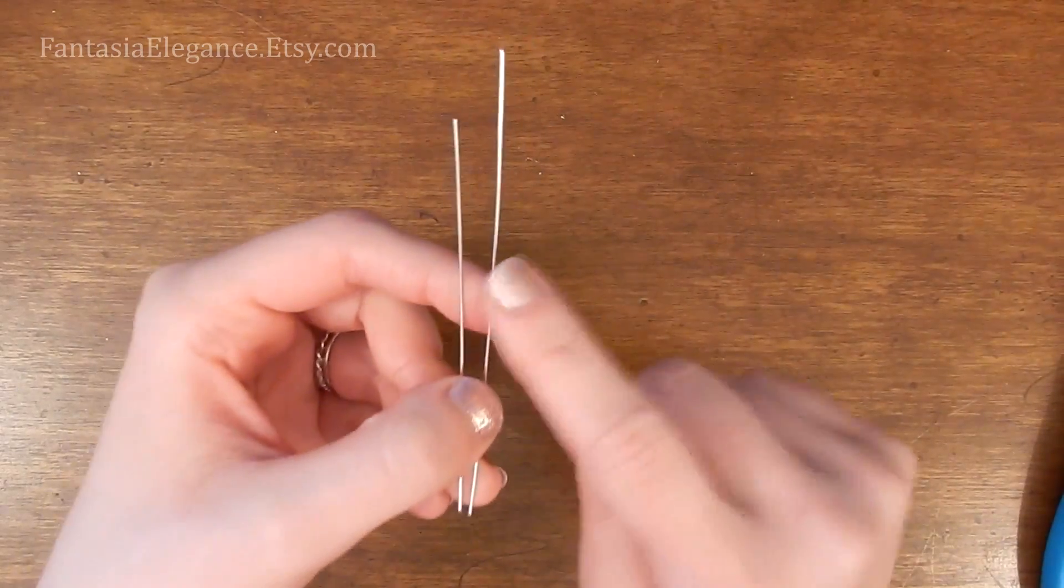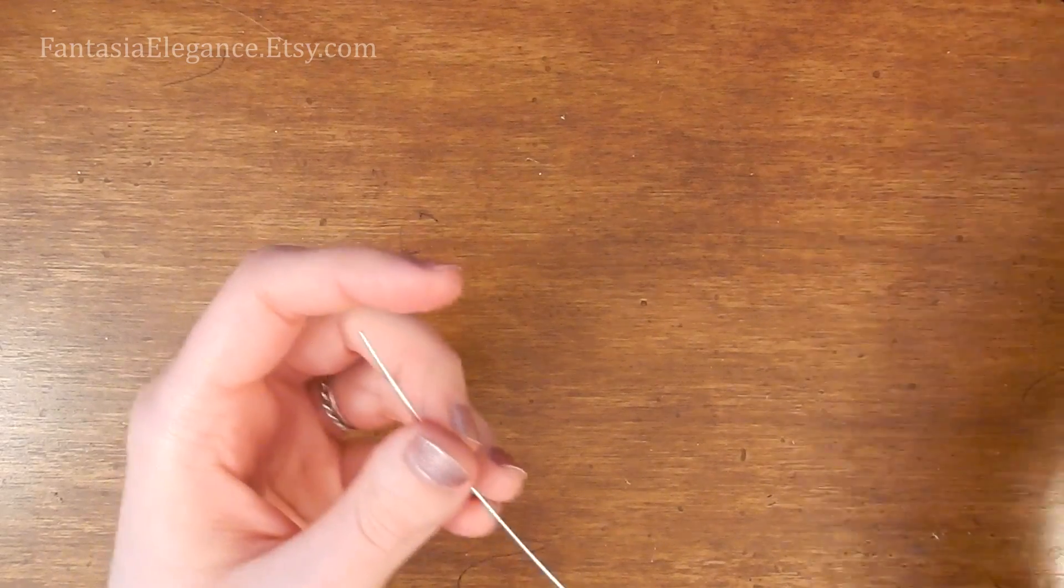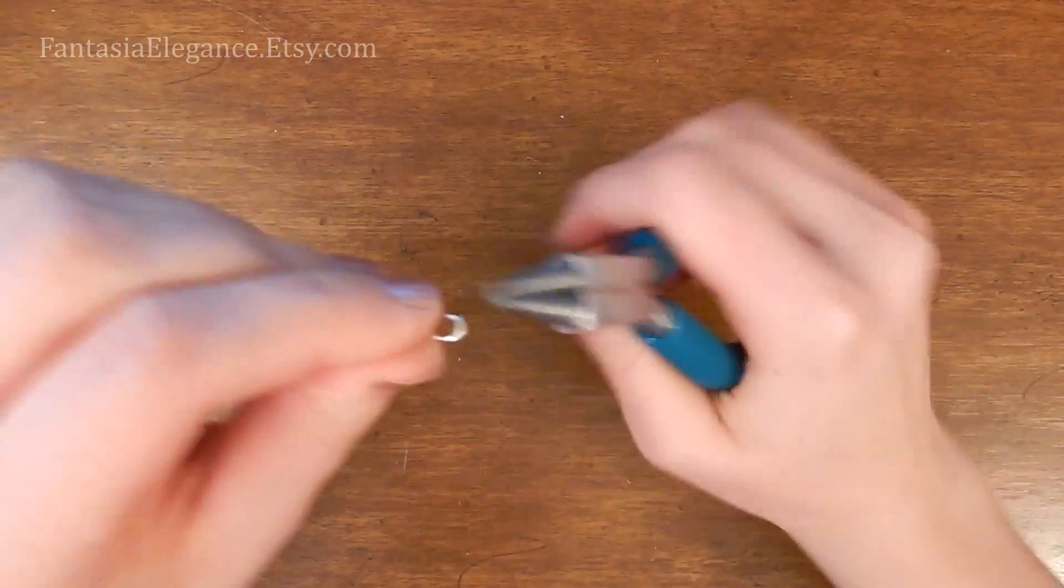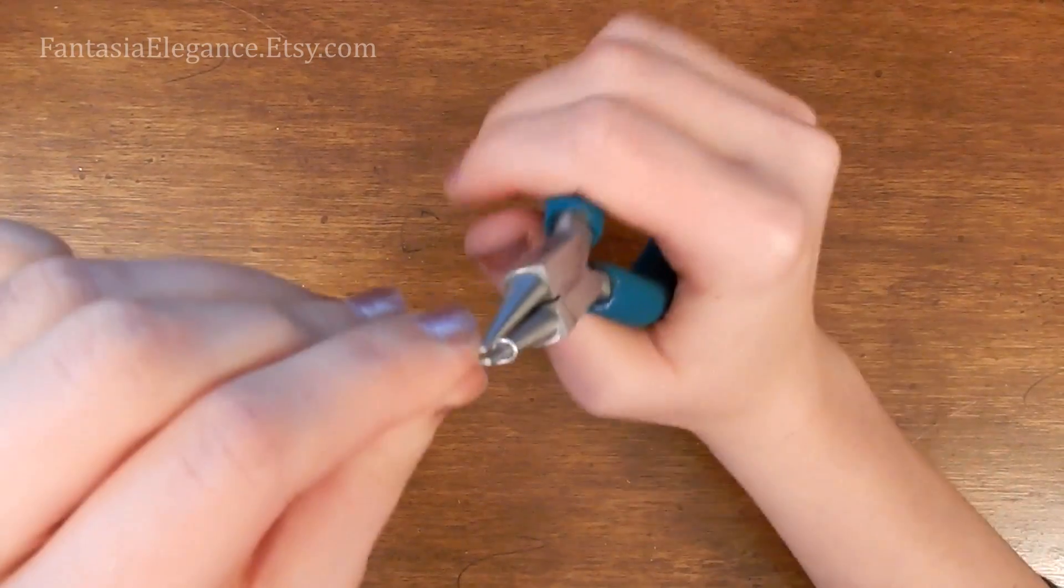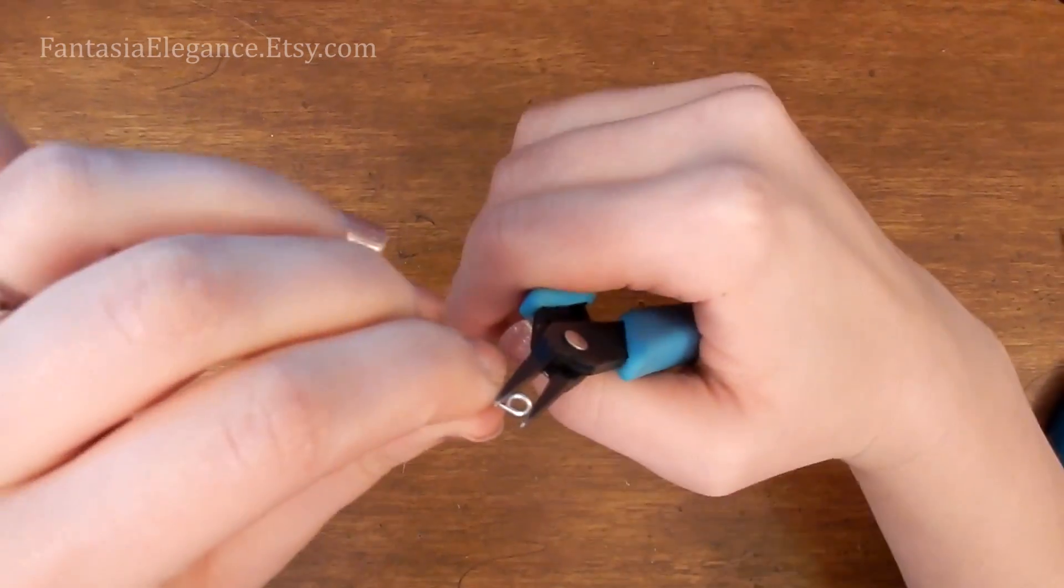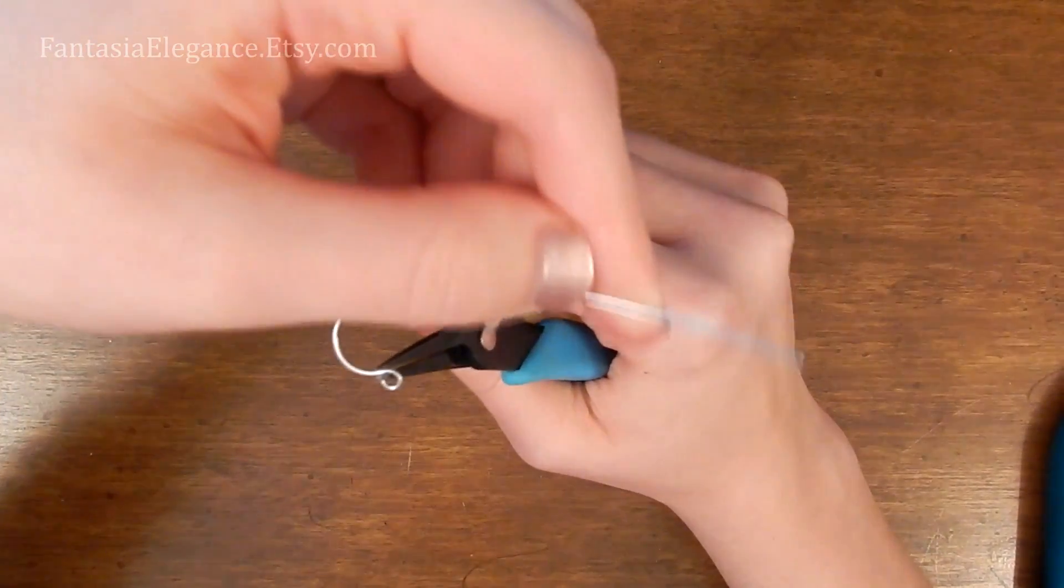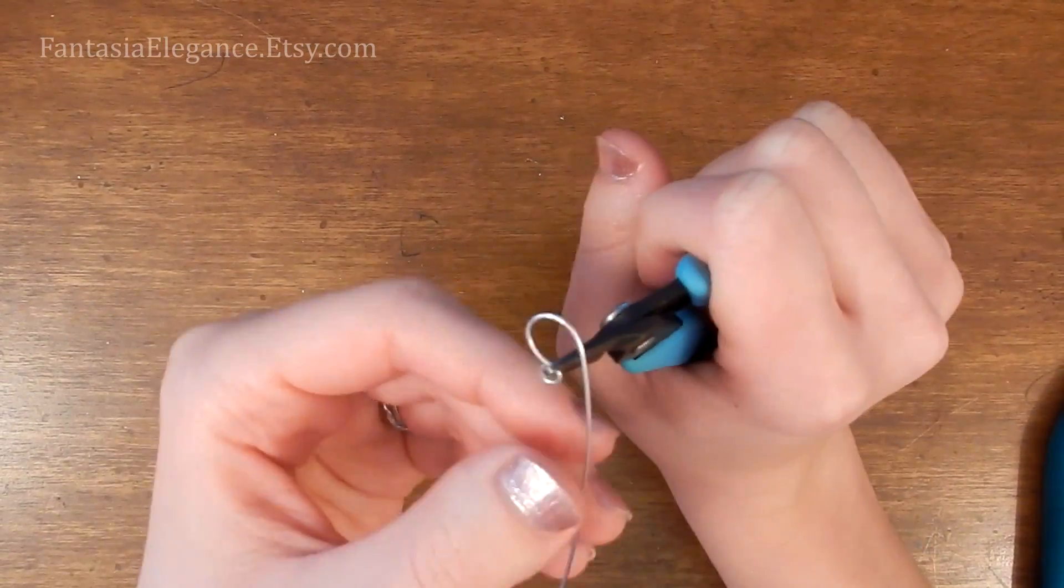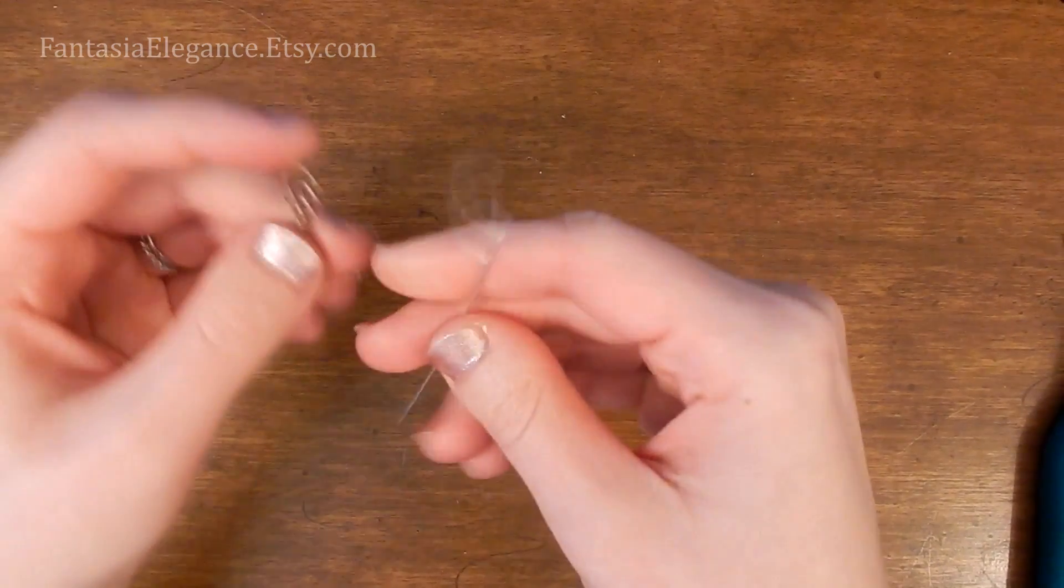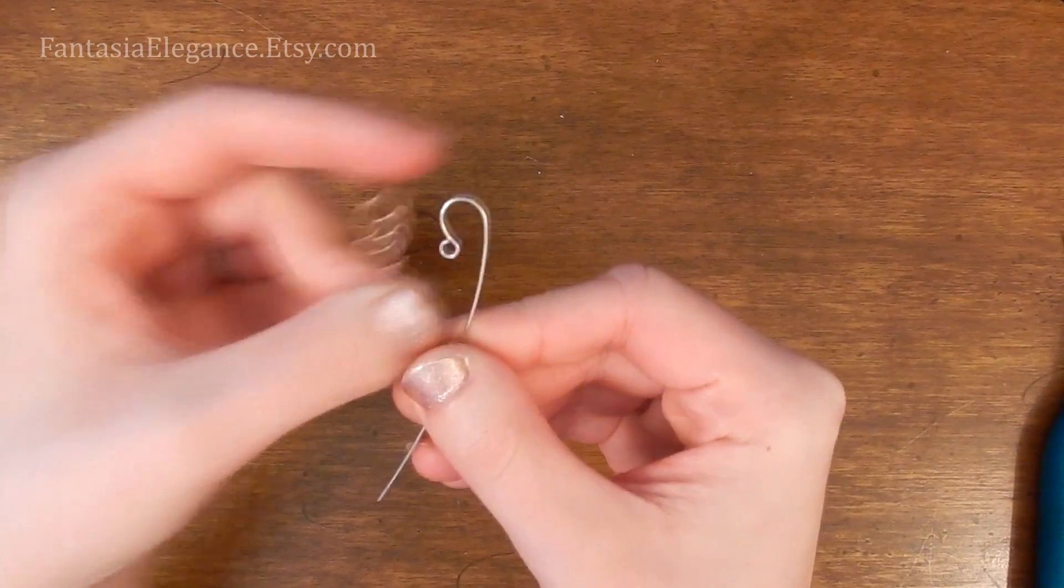So as before, we'll make the hook first. So take your longer wire and we're going to start out just the same way as the other one. We'll start by forming a little loop on the end. And that will be the portion of your hook that goes into your loop clasp. And as before, we'll just curve this on around. But for this one, we want to put some little swirls along the side, as you can see there.